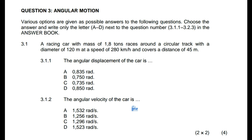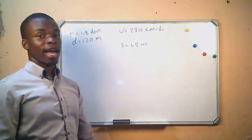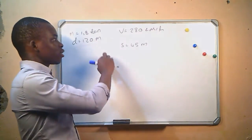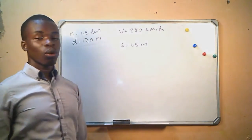A racing car with a mass of 1.8 tons races around a circular track with a diameter of 120 meters at a speed of 280 kilometers per hour and covers a distance of 45 meters. The questions ask: question one, the angular displacement of the car is — with options to choose from; and question two, the angular velocity of the car is — also with options. The given information includes the mass, the diameter of the track, the velocity, and the distance travelled.